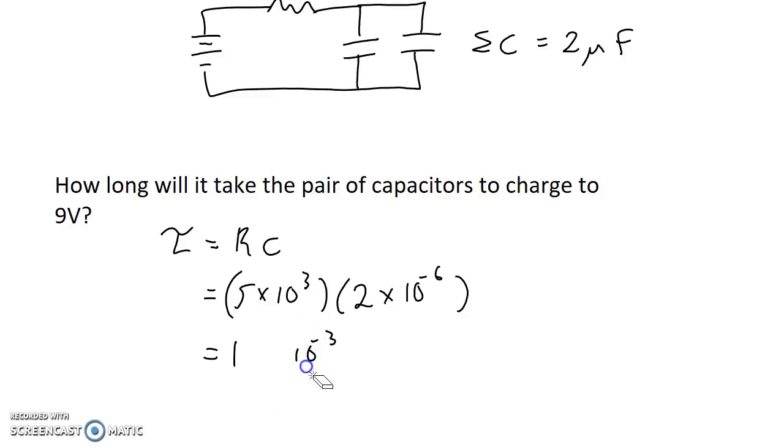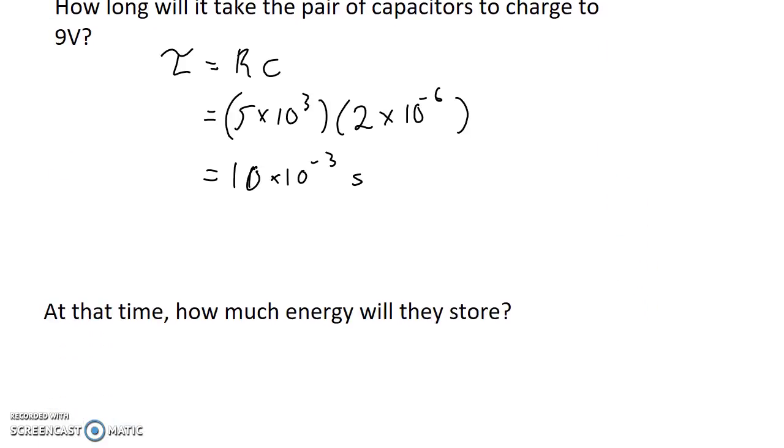So the time constant is measured in seconds. The time constant actually means the time that it's going to take for the capacitor to charge roughly to 37 percent of capacity, but that's not what the question wanted. The question wanted to know how long is it going to take for the pair of capacitors to charge to 9 volts, or 90 percent of capacity?